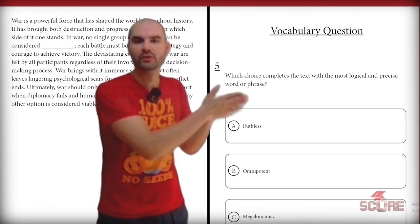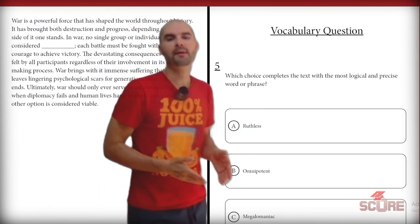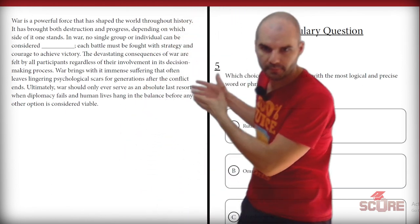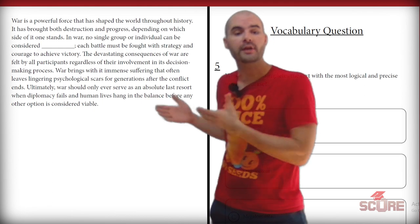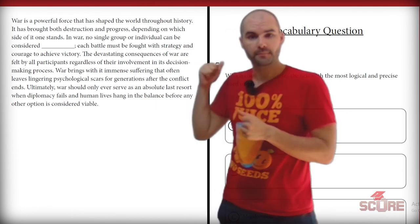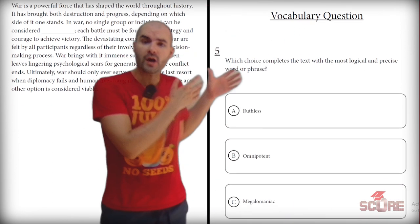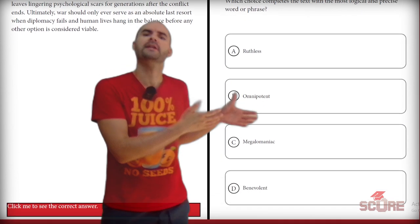Okay, for question number five, same deal. Look at the question, identify that it's vocabulary, take a look at the place where the blank is. I see here it says in war, no single group or individual can be considered blank. Looking at my options, I have ruthless, omnipotent, megalomaniac, and benevolent. I can rule out megalomaniac because that's actually a person and would not be an adjective.